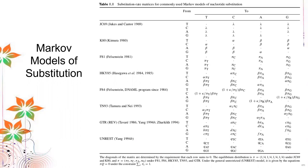We won't discuss each model in detail, but you usually see them as optional parameters. For example, in BLAST, when we modify parameters, we are given options on which substitution matrix to use. The names like JC69 and HKY85 are the initials of the authors followed by the year they were published.